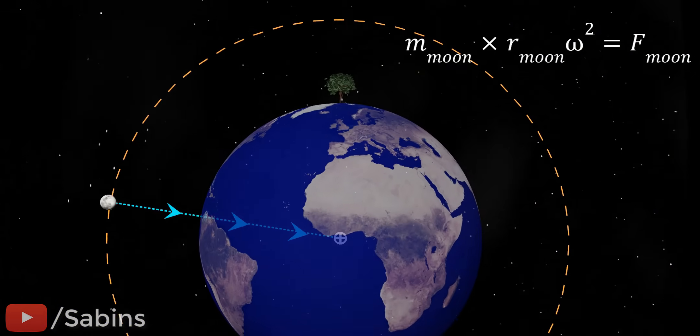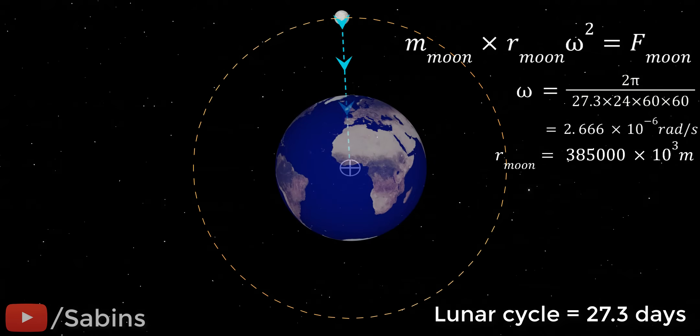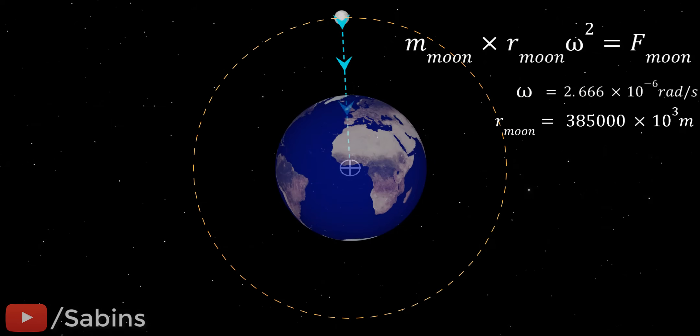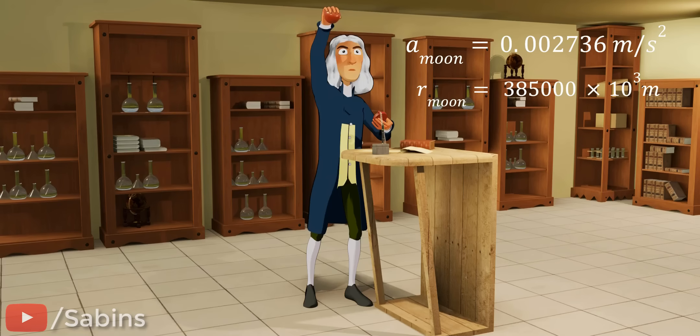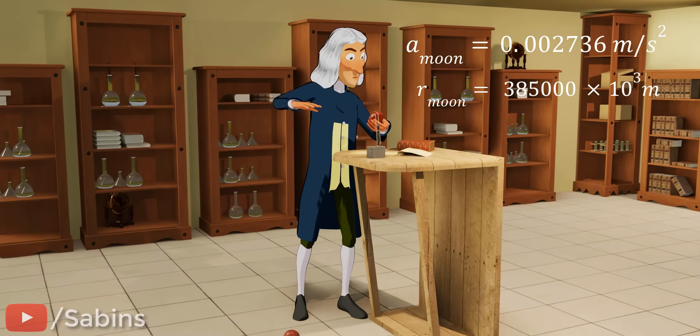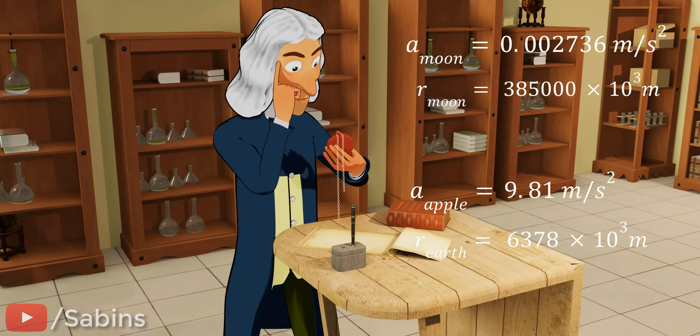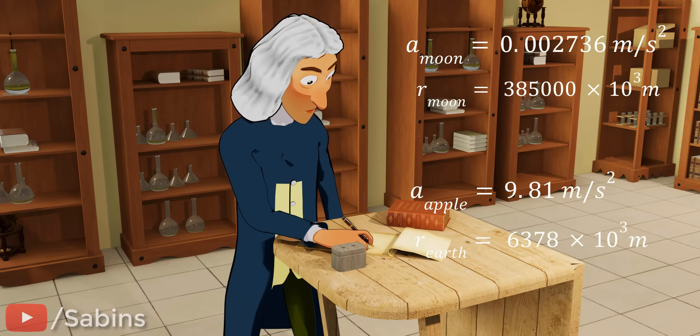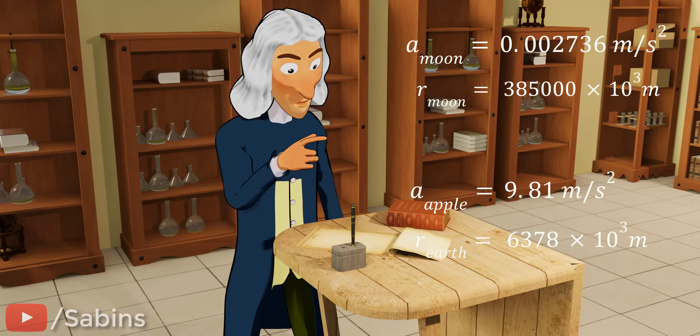People at that time already knew the Moon's angular speed and the distance between the Earth to Moon. Based on this force balance idea, Newton calculated the centripetal acceleration of the Moon. The force acting on the apple near to the Earth's surface can be easily calculated by measuring the apple's acceleration. The value of this acceleration is 9.81 meter per second squared. Newton compared these two acceleration values with the distances from the center of Earth. Can you spot any connection between these four numbers?